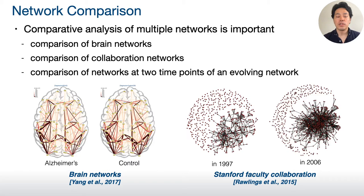Finding unique characteristics in one network by comparing it with another network is an important analysis task. For example, by comparing Alzheimer's disease and healthy brain networks, we can understand their functional connectivity differences.